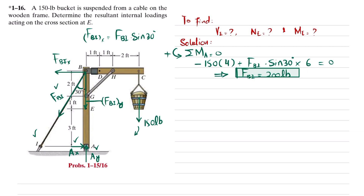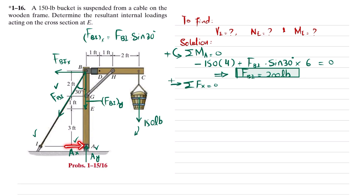Now applying the equilibrium condition: sum of all forces along the x-direction equals zero, taking forces in the positive x-direction as positive. We have Ax and the x-component of FBI. So Ax minus FBI times sin 30 degrees equals zero. FBI is 200, so 200 times sin 30 degrees gives FBIx. From this, Ax equals 100 pounds.